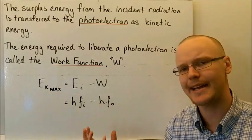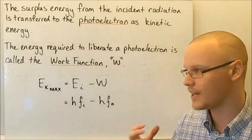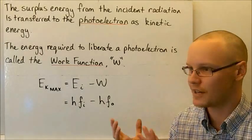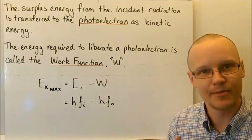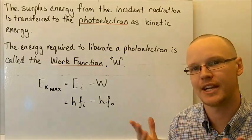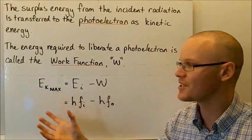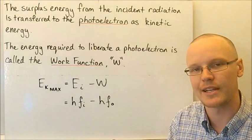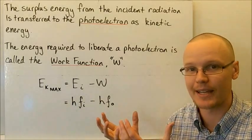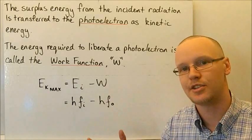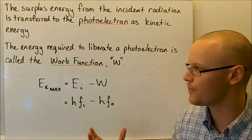Why is it the maximum kinetic energy? An electron being liberated from a metal could collide with other electrons or particles in its environment, or be affected by electric or gravitational forces. So this is the very maximum — most electrons won't have this kinetic energy as they leave the metal because some energy will be lost to the surroundings.